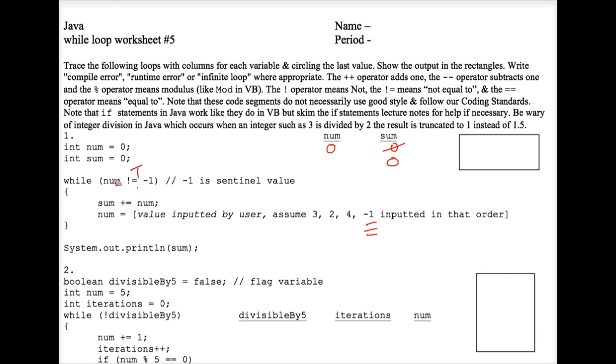And now we get to this line of code where I'm just kind of using English here to explain. You're supposed to assume that the number 3 gets inputted into the variable num at this moment. So cross that 0 out and make it a 3. We hit the closing curly brace. We loop back up to the top. Is 3 not equal to negative 1? True. So we go through the loop. Sum plus equals num.